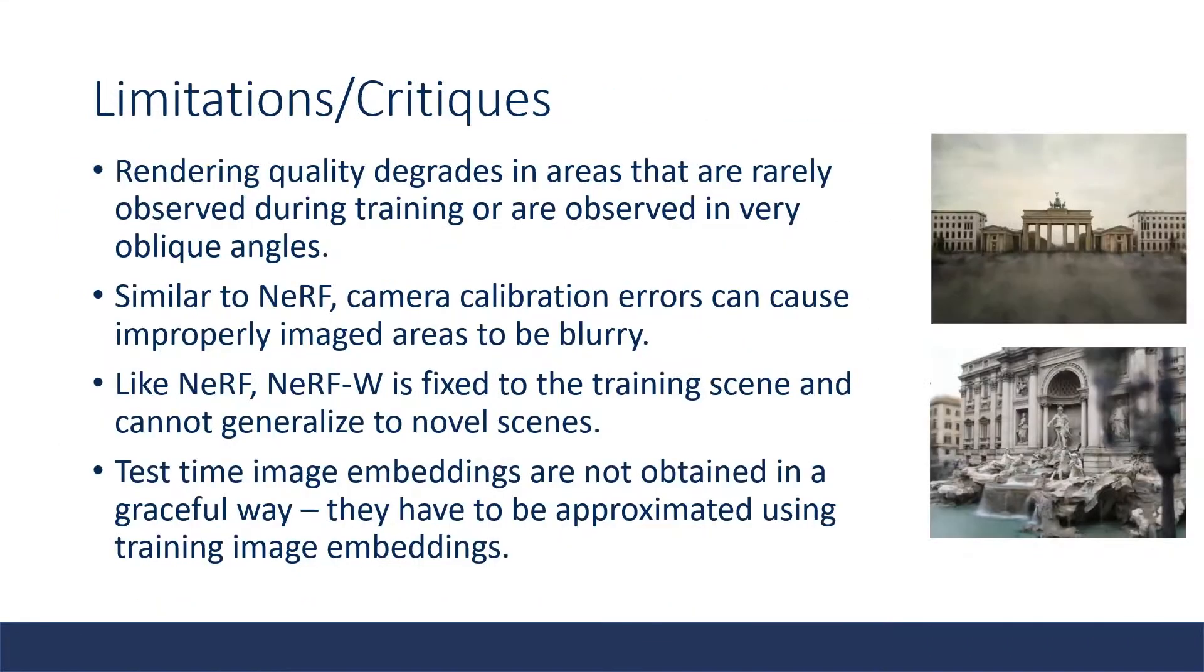Some of the limitations of NeRF-W is that rendering quality degrades in areas that you rarely see during training or observe at very oblique angles. You can see this in the floor in the first image. Similar to NeRF, you can also have problems with camera calibration errors as improperly imaged areas can become blurry after being trained on them, as you can see in the bottom image on the right. Like NeRF, NeRF-W also cannot generalize easily to novel scenes, as every NeRF-W model is trained specifically for a certain training scene. In addition, test time image embeddings are not obtained in a very graceful way. Because embeddings have to be optimized directly during training, during test time, test time images also have to be optimized on the left half of the image, and this can definitely be improved.